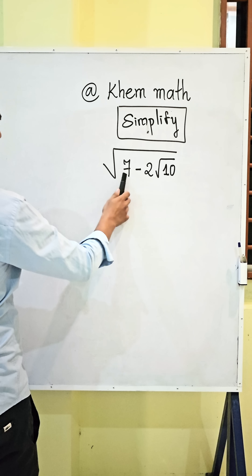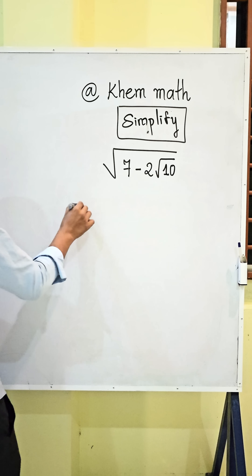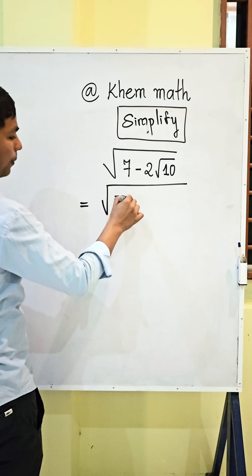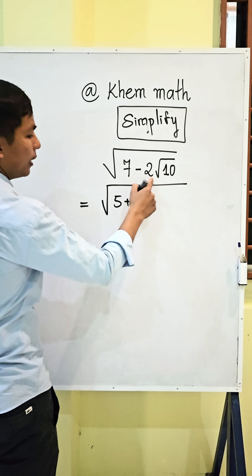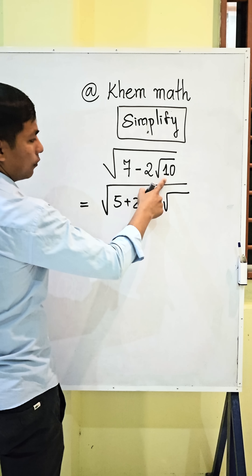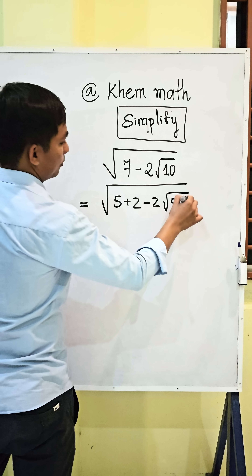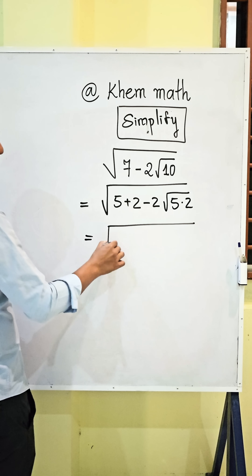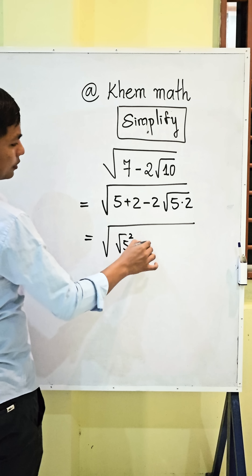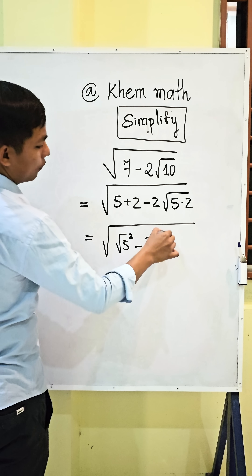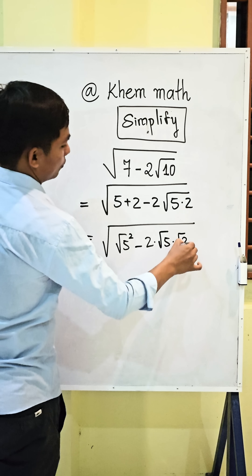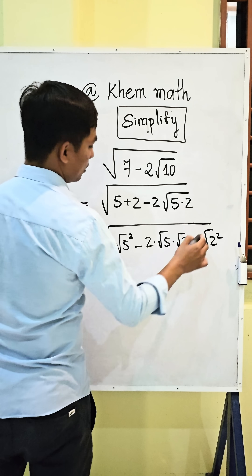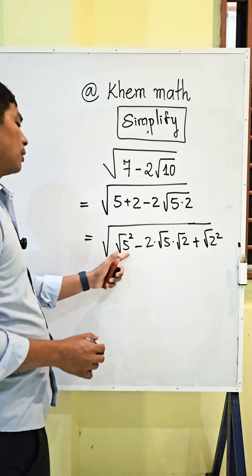Simplify square root of (7 minus 2√10). We rewrite 7 as 5 plus 2, and 2√10 as 2 times √5 times √2. This gives us √(√5² minus 2·√5·√2 plus √2²), which matches the formula a² minus 2ab plus b².